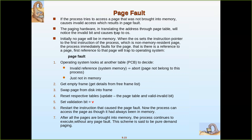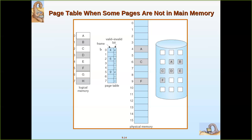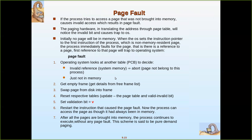The paging hardware translates the address through the page table from the logical address space to the physical address. The paging hardware, during address translation through the page table, will notice the invalid bit and cause a trap to the OS. A trap is essentially an error — it is an interrupt to the operating system.